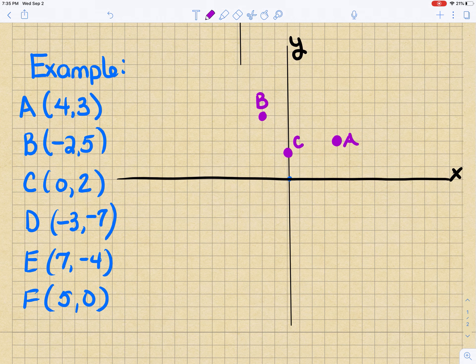E is moving 7 positive, so we start at (0, 0) and we go over 7: 1, 2, 3, 4, 5, 6, 7. But then we go down 4: 1, 2, 3, 4. I went down because it was a negative. And that's E.